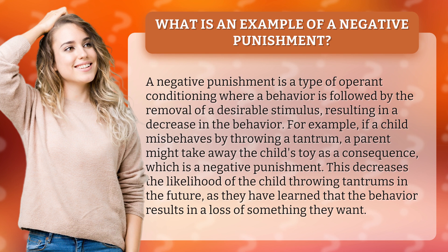For example, if a child misbehaves by throwing a tantrum, a parent might take away the child's toy as a consequence, which is a negative punishment. This decreases the likelihood of the child throwing tantrums in the future, as they have learned that the behavior results in a loss of something they want.